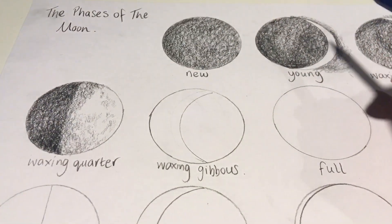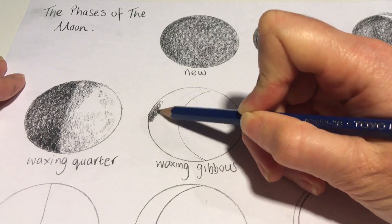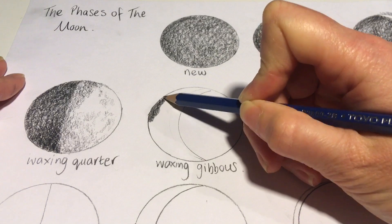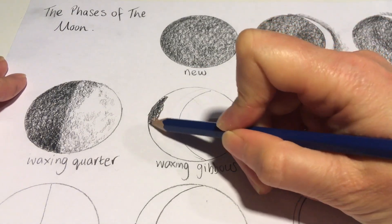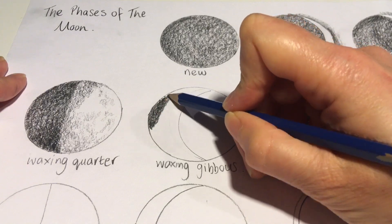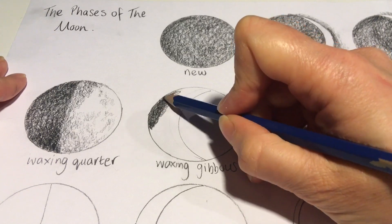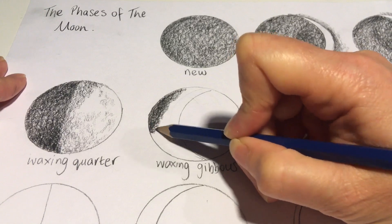Now we're onto the waxing gibbous. Again, we're adding the darkest areas of tone on the left hand side of the moon. As you can see on the waxing quarter, I've started to lighten up some of the pencil areas to show some lighter areas of tone. That gives a little bit of texture to the moon as well as making it look a little bit more 3D.